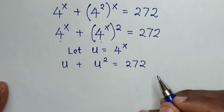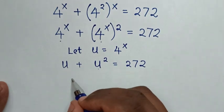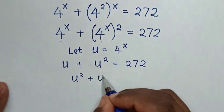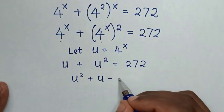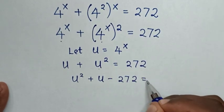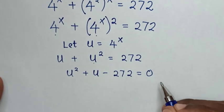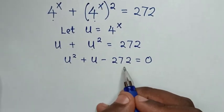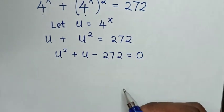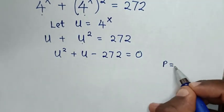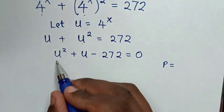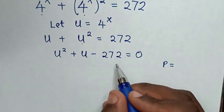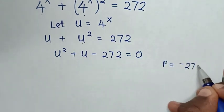In the next step, our equation becomes u squared plus u minus 272 equals 0. Because this is a quadratic equation, we will solve by factorization, where the product equals the coefficient of u squared (which is 1) times the constant (negative 272), giving a product of negative 272.